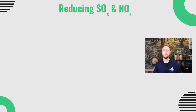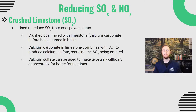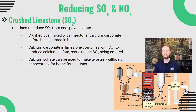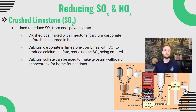Next, we'll talk about technologies for reducing SOx and NOx emissions in coal-fired power plants. The first method involves using crushed limestone, which is combined with coal before it's sent into the boiler. Limestone is largely made up of calcium carbonate (CaCO₃). When coal is burned in the presence of limestone, much of the sulfur dioxide (SO₂) produced combines with the calcium carbonate and is trapped as a solid — calcium sulfate — instead of being emitted from the smokestacks. This calcium sulfate can then be used productively, such as in gypsum wallboards or sheetrock for buildings.